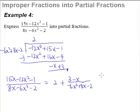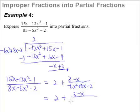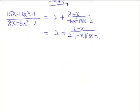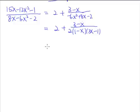Now that the question becomes simpler, because we know how to change a proper fraction into partial fractions, what we do next is to factorize the denominator. So we have 3 minus x over — we can take out a factor of 2, giving us 2 times (1 minus x) times (3x minus 1). We need a bit more space, so let's scroll up. As we have done earlier, we know that this fraction can be expressed as a sum of two simpler fractions.